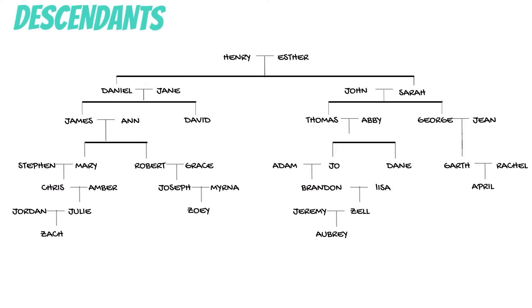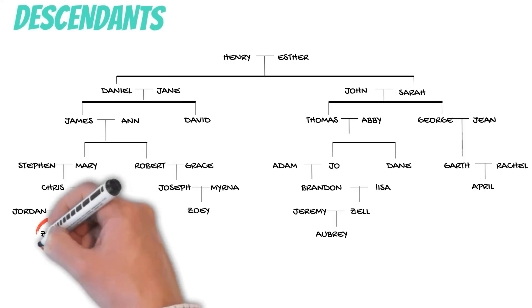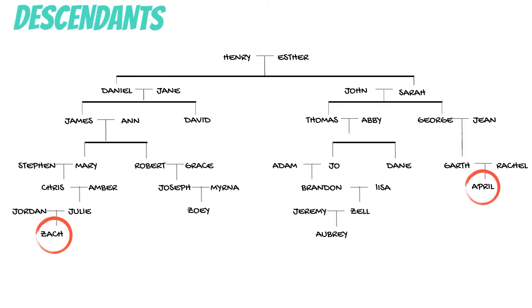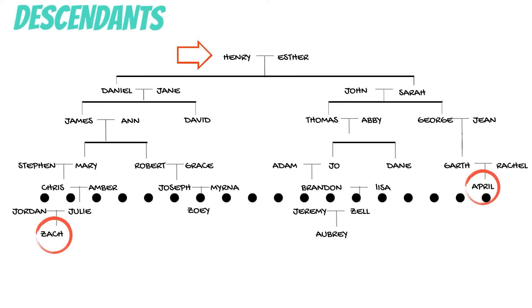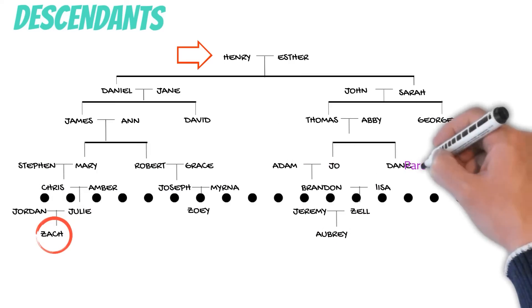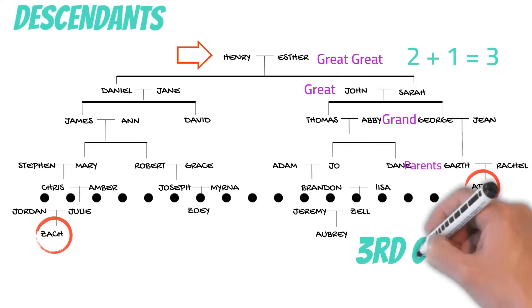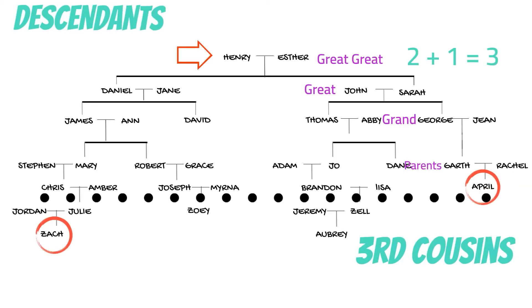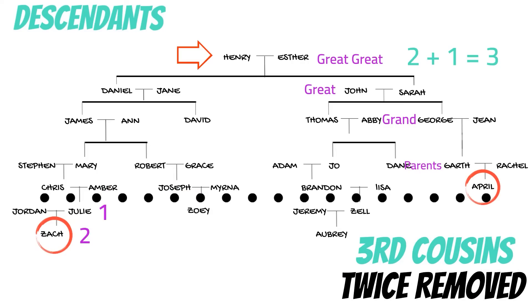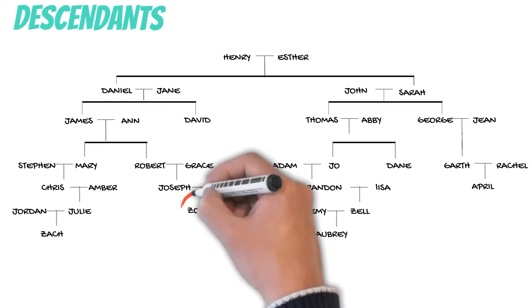All of our previous examples involved cousins who were in the same generation on our tree. Now let's do one where they're not in the same generation. Zach and April are not in the same generation — their common ancestor is Henry and Esther. We start with April because she's closer to Henry and Esther, and figure out what cousin relationship she would have to those in the same generation. Using method one, April would be third cousins with those in her same generation. Zach is two generations away from April, so he is twice removed — making them third cousins twice removed.